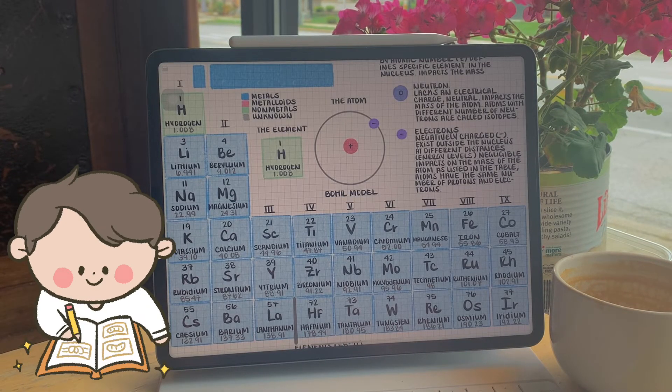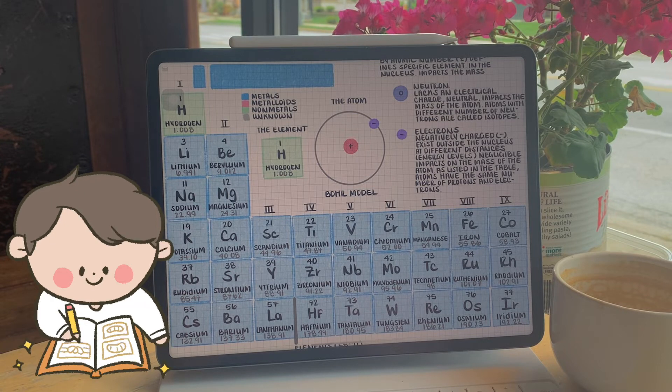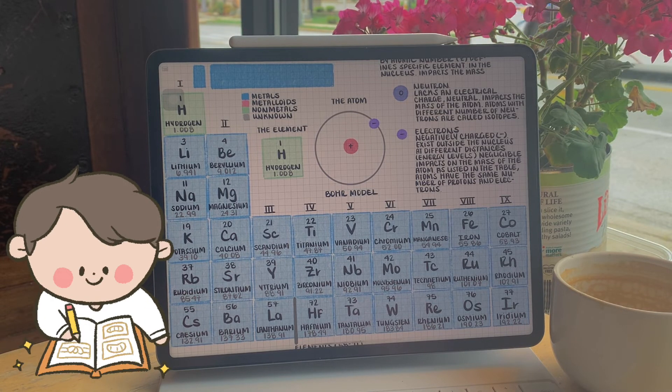If we have various isotopes for different elements, why on the periodic table is there only listed one weight per element.